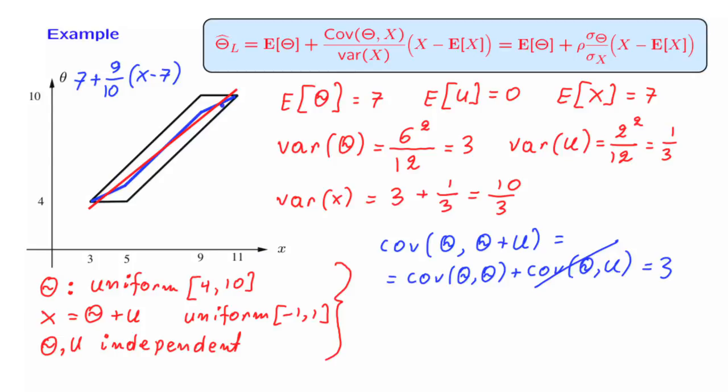So in some sense, the linear estimator is a pretty good approximation of the optimal nonlinear one. It does the best job that it can do, subject to the constraint that it has to be a linear function. Notice also that this coefficient here is, of course, positive. This reflects the fact that the two random variables, x and theta, are positively correlated. This should be clear from this diagram. When x increases, theta tends to also increase, and vice versa. It's also reflected in the fact that the covariance is a positive number.